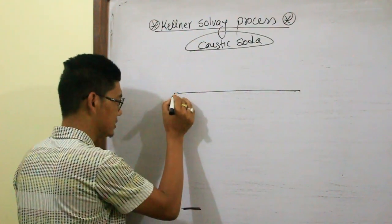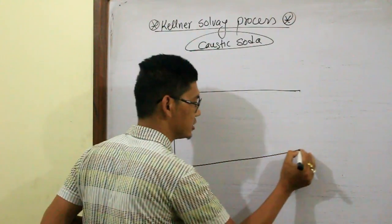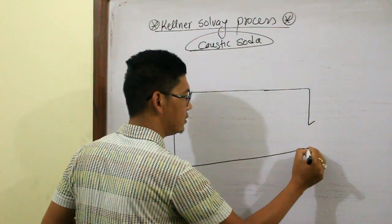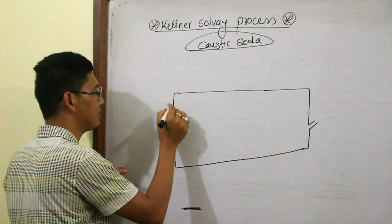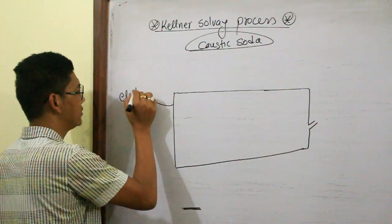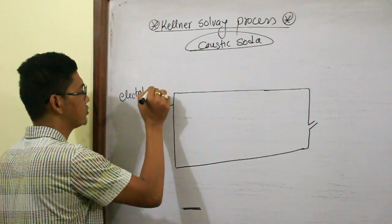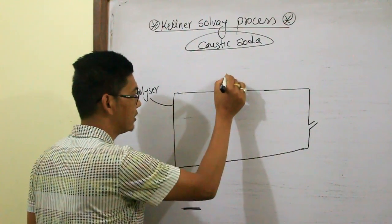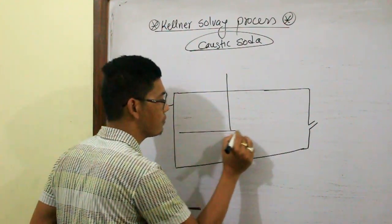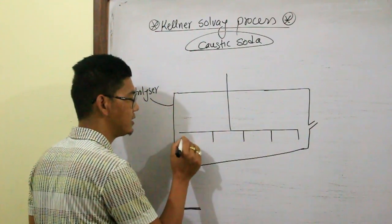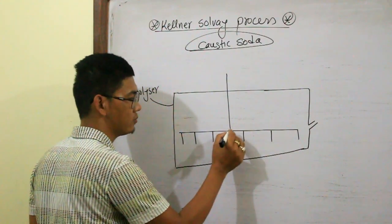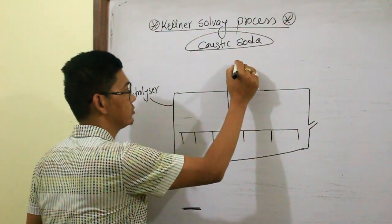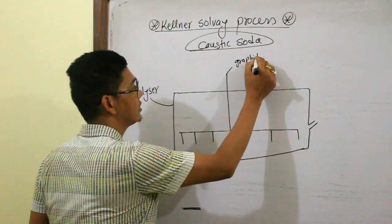This is a big tank which is known as the electrolyzer. This big tank consists of several graphite anodes.